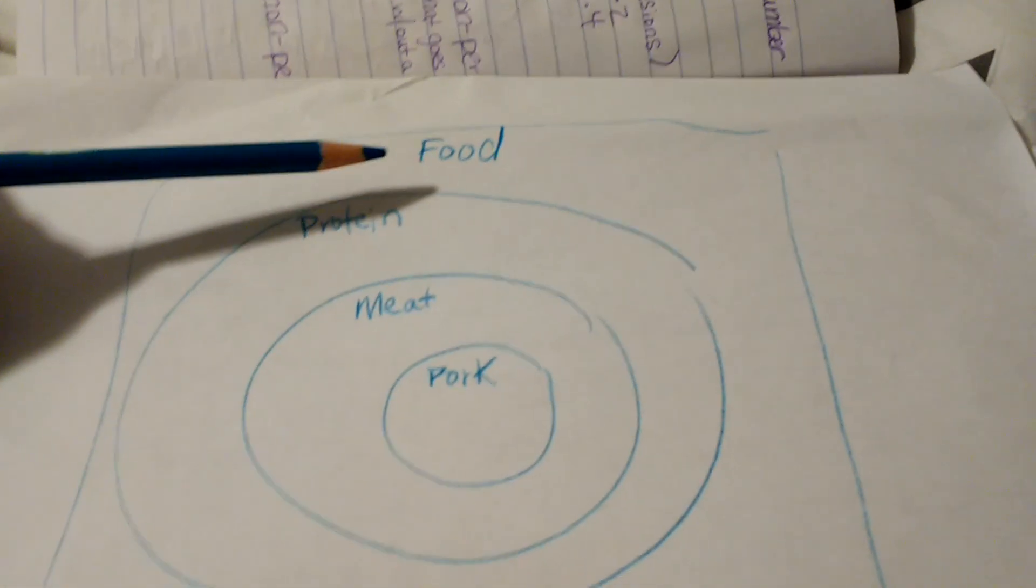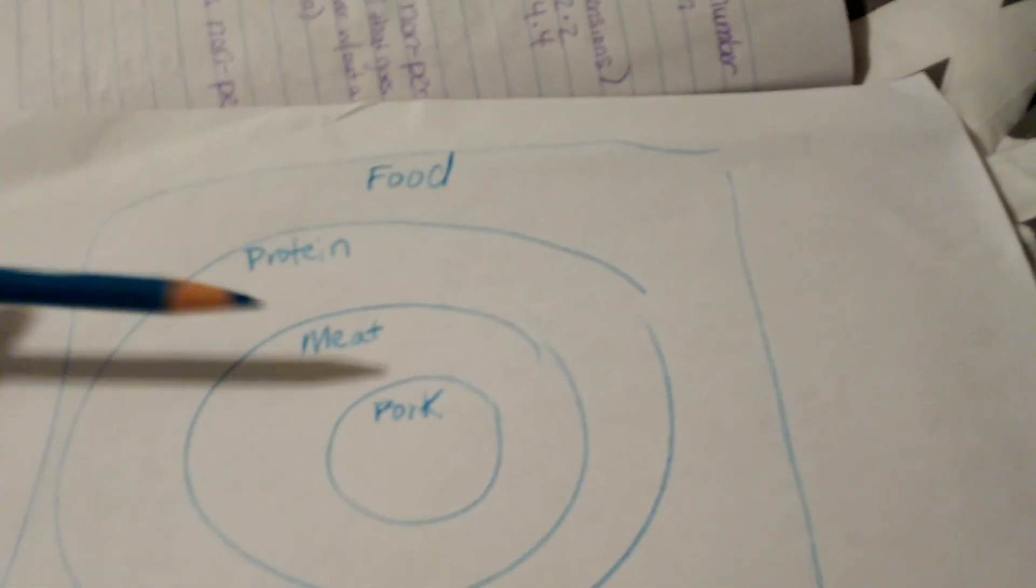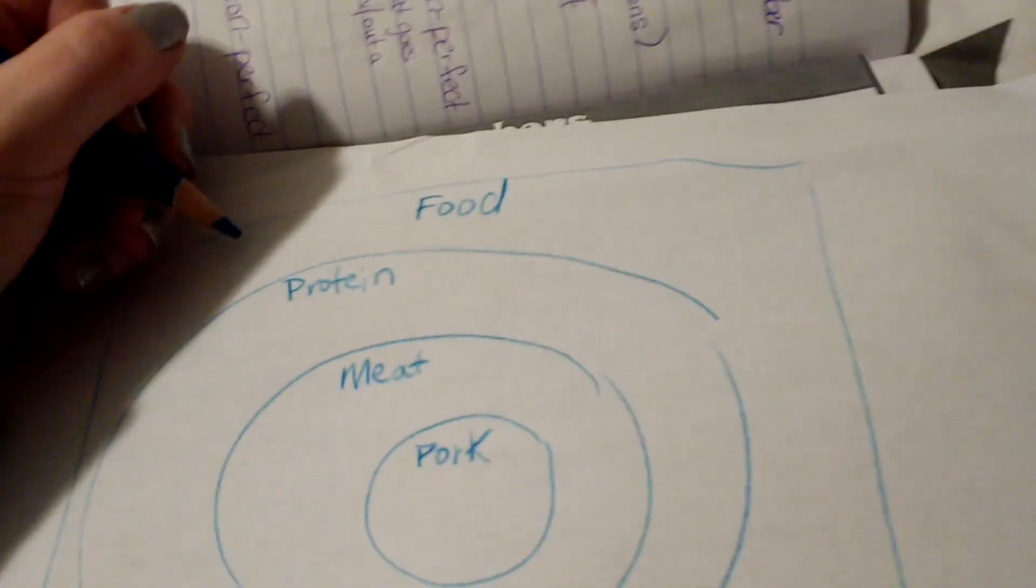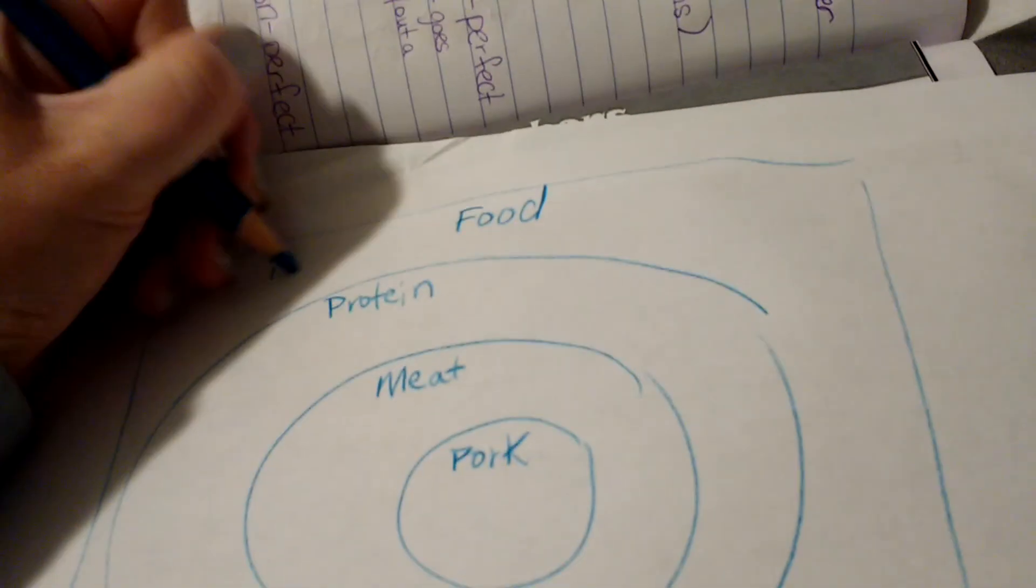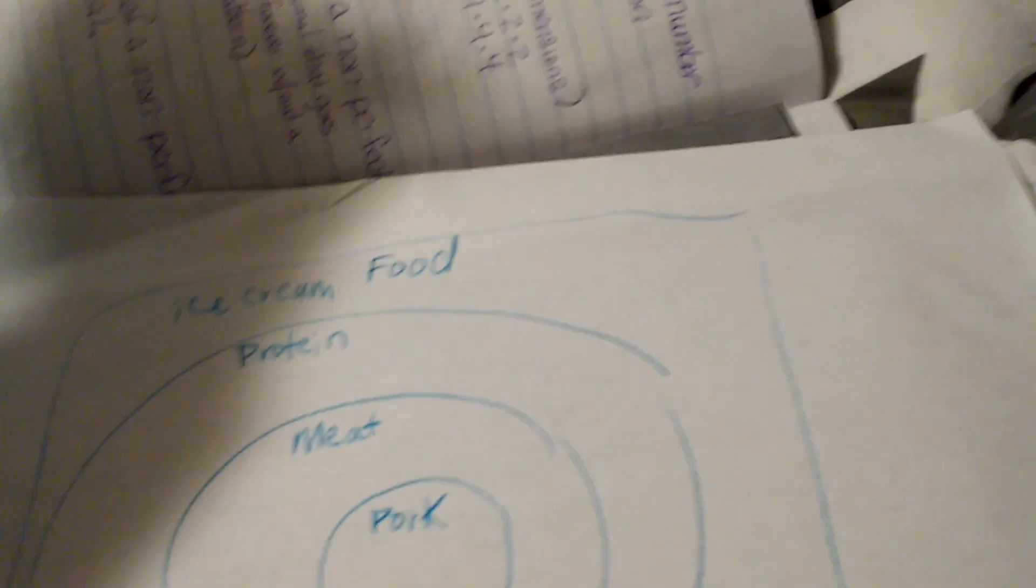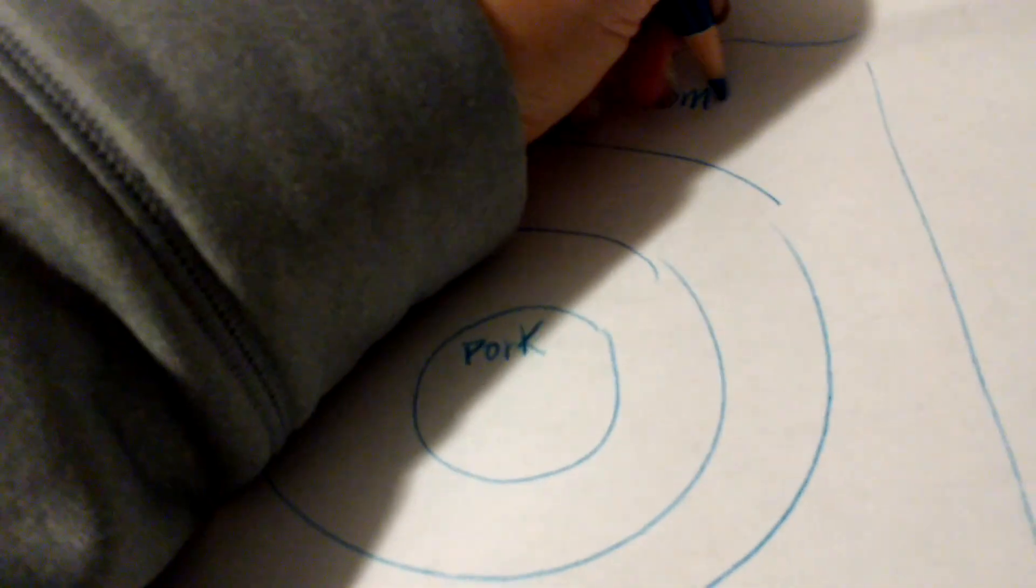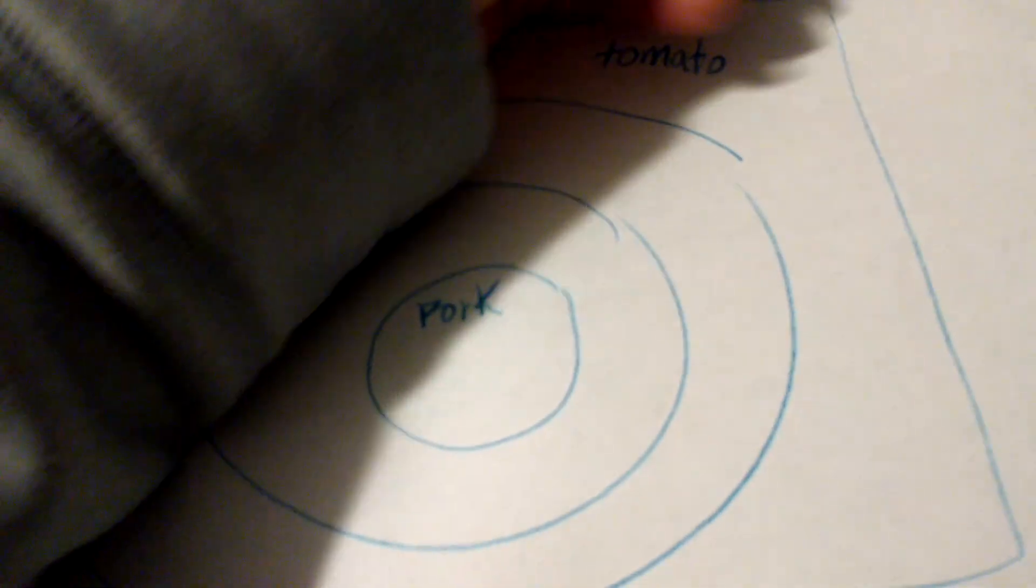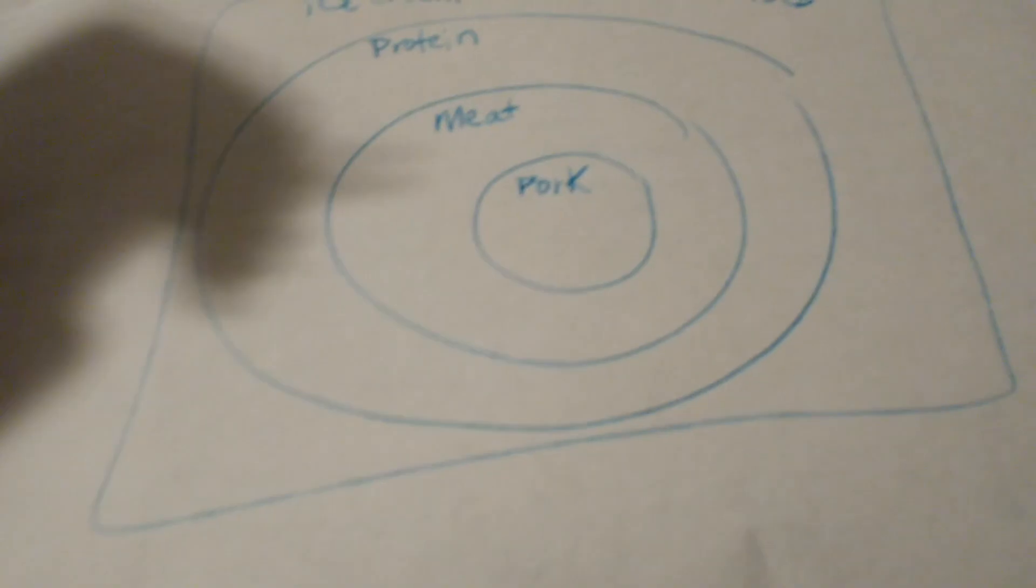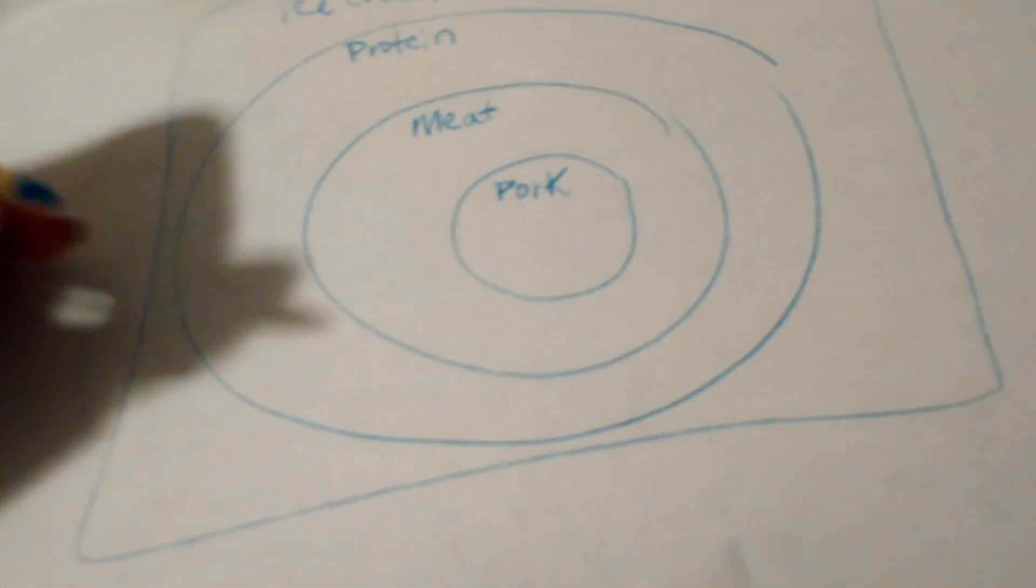So let's say that we have this chart of food, and then protein, meat, and pork. The things that are food that go out here would be things like ice cream, tomatoes, things like chips, and you can think of many more.